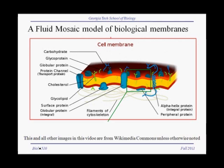Biologists look at the cell membrane as a fluid mosaic. This is called the fluid mosaic model, and a model is a conceptualization based on the data. The fluid mosaic model has two parts. The mosaic part comes from the fact that the cell membrane consists of a mosaic of lipids, and the lipids form a bilayer.